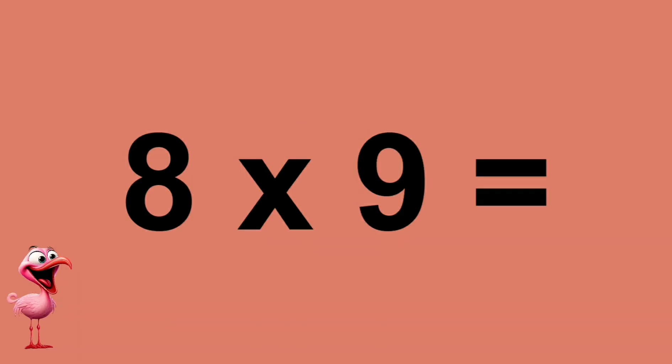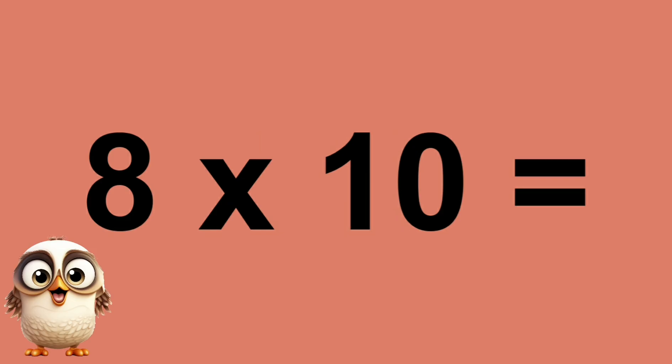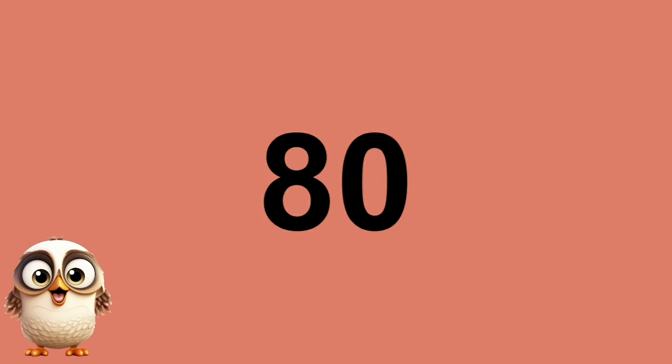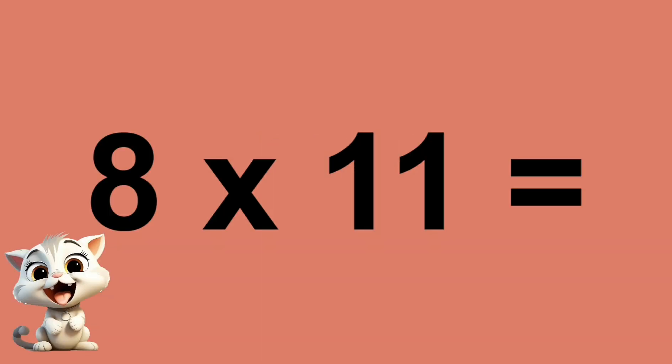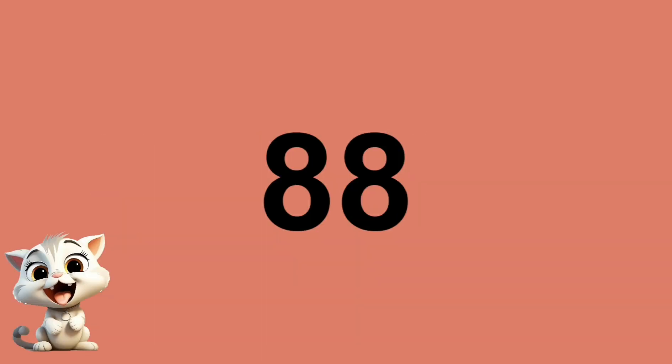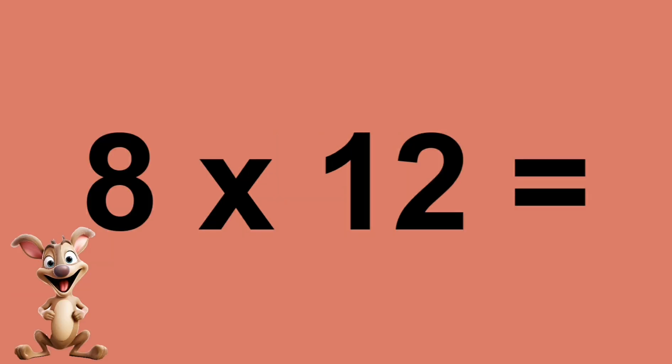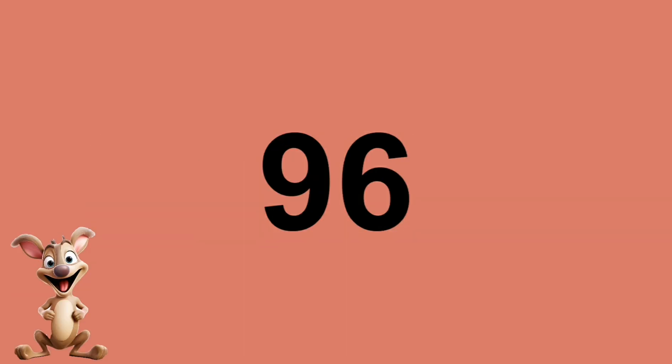Eight times nine equals seventy-two. Eight times ten equals eighty. Eight times eleven equals eighty-eight. Eight times twelve equals ninety-six.